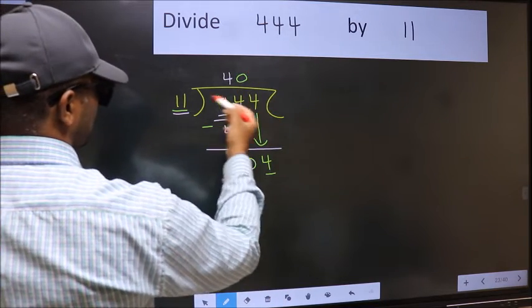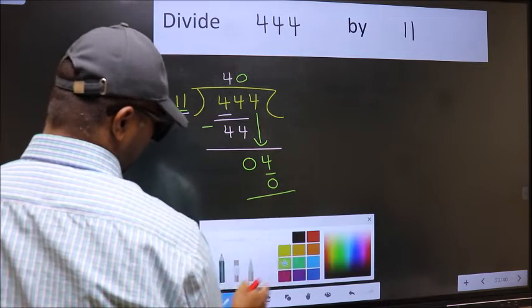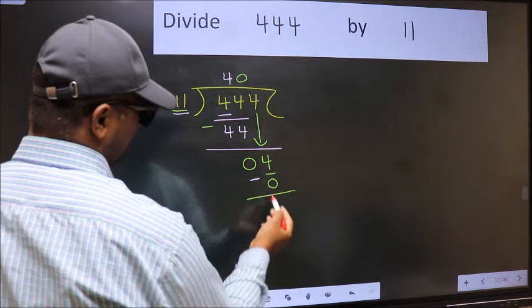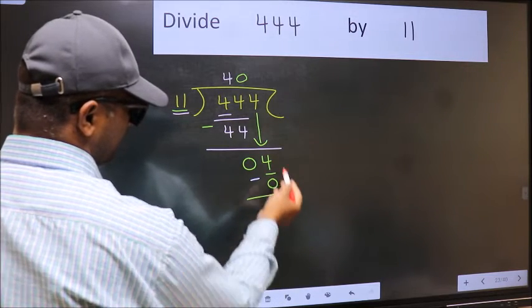So 11 into 0, 0. Now you should subtract 4 minus 0, 4. Over here we did not bring any number down and 4 is smaller than 11.